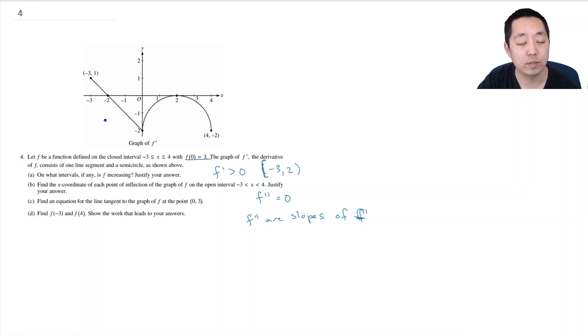Okay so down here f double prime is 0 or undefined. At this point f double prime is undefined. Here the slopes are positive so at this interval f double prime is greater than 0. Here we hit 0 slope right here, f double prime equals 0. And then here the slopes are negative so that means f double prime less than 0.